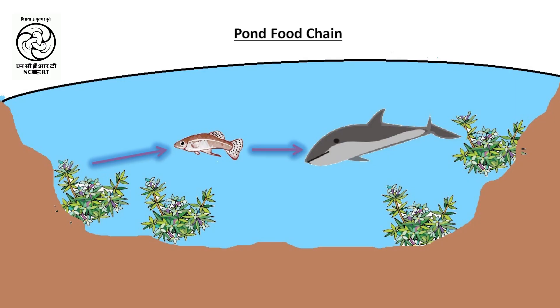One more chain is in there, and that's for the pond ecosystem, where the hydrophytes are present. Small fishes are dependent on the hydrophytes, and these small fishes are eaten up by the big fishes — that again completes our pond ecosystem. But why is this happening in nature?